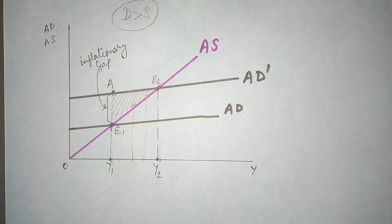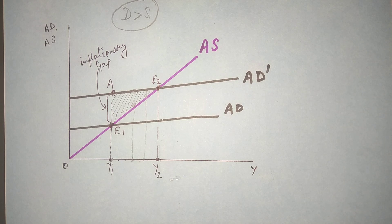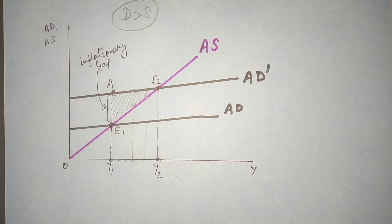This was about the inflationary gap. For Keynesian view on inflation, for demand pull theory of inflation, for demand pull theory with the help of ISLM, for cost push inflation, for cost push inflation with the help of ISLM — must watch other parts of this video. Thank you, thanks for watching this video.